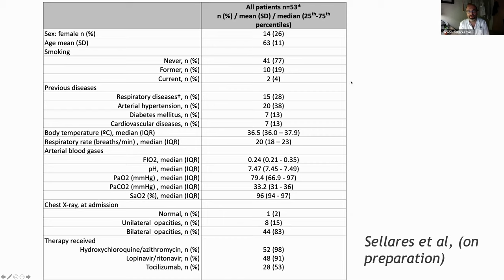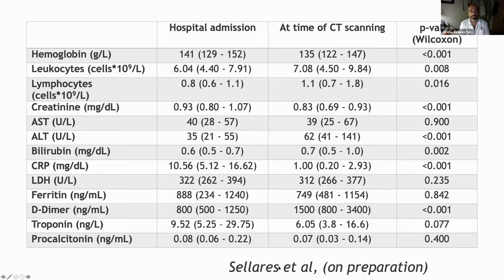Following this pattern, we followed up these patients. In the initial 53 patients, we saw a pattern — not many patients were smokers and not many had chronic diseases. We see different respiratory failure stages. Normally they had bilateral opacities on admission. Most of them in our center received hydroxychloroquine, azithromycin, and the combination with lopinavir/ritonavir. About half the patients received tocilizumab.